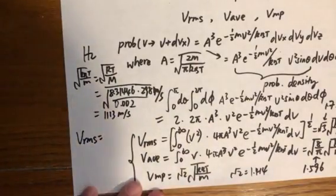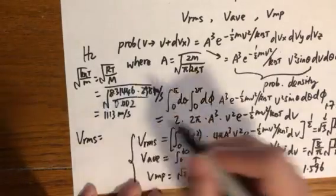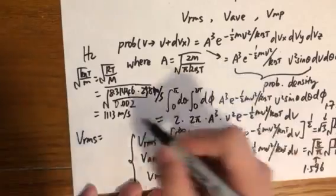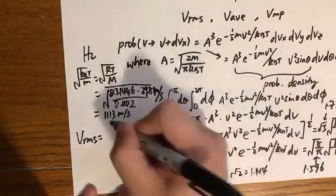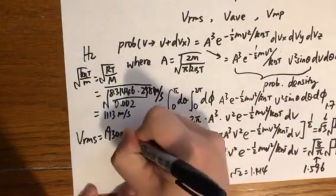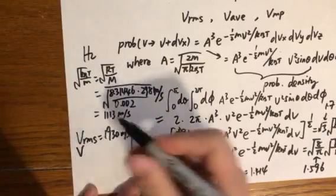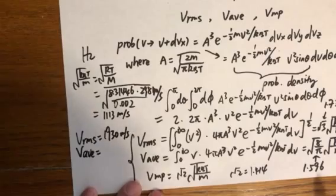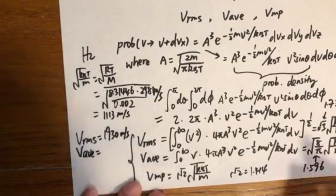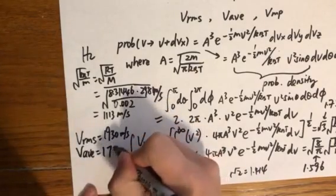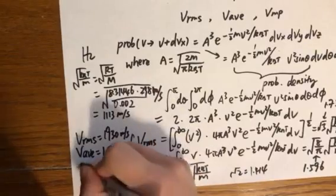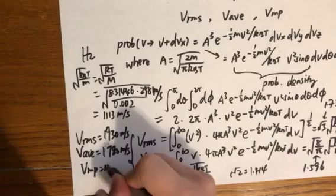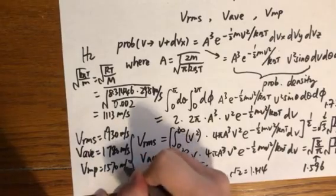I pre-calculated those numbers in an Excel sheet. The root mean square speed for a hydrogen 2 molecule in the gas phase at room temperature is 1930 meter per second. The average speed is smaller, 1780 meter per second. And the most probable speed is even smaller, 1570 meter per second.